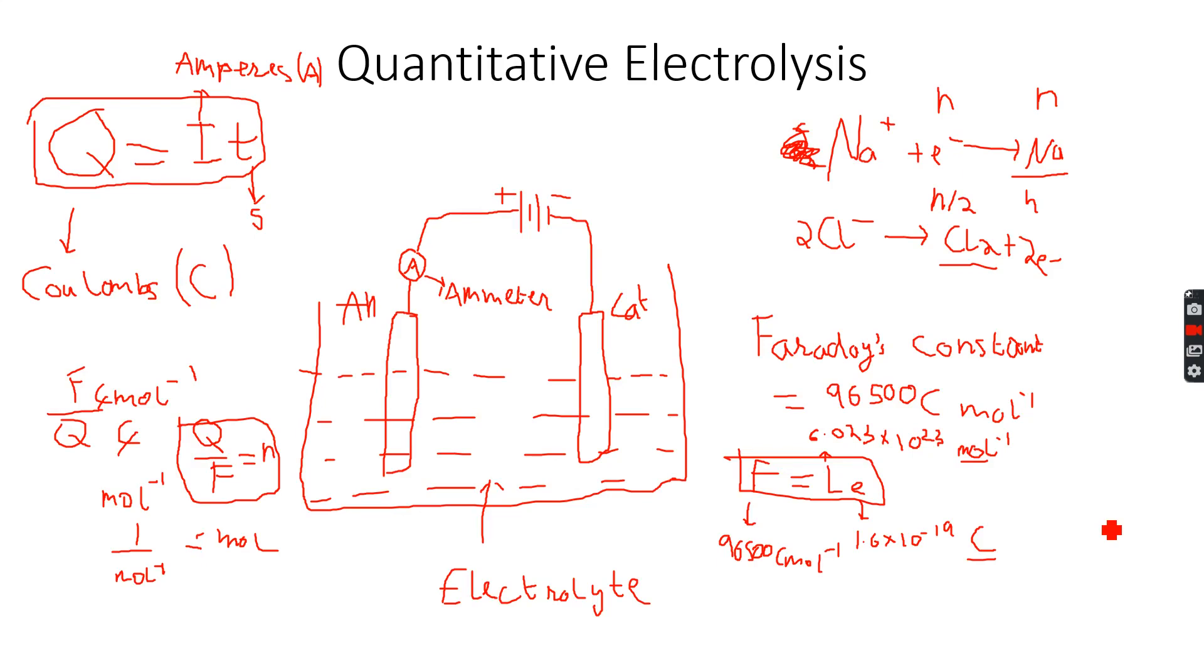So we can calculate the number of moles of sodium, number of moles of chlorine, and hence we can calculate the volume of chlorine or the mass of chlorine and similarly the mass of sodium produced. These three equations that I've highlighted in squares: F equals L·e, Q equals I·t,